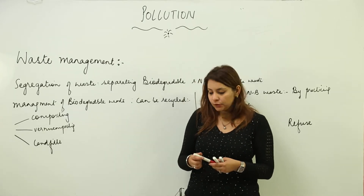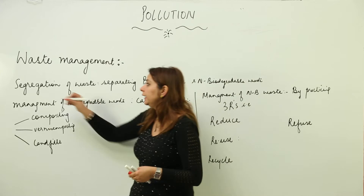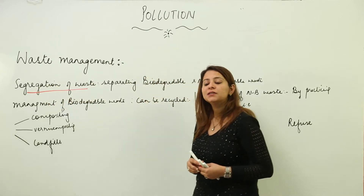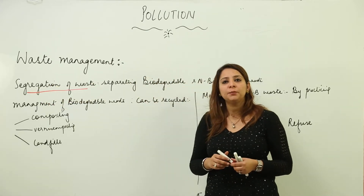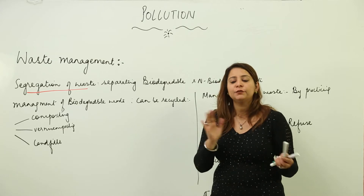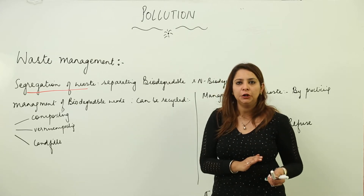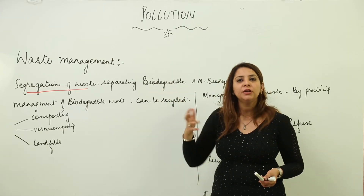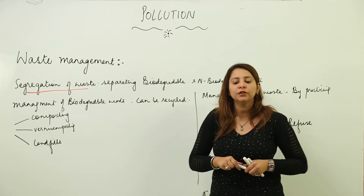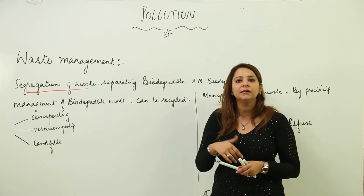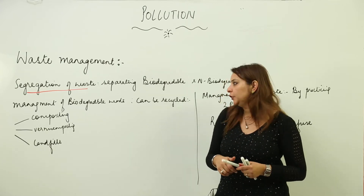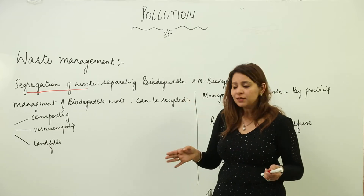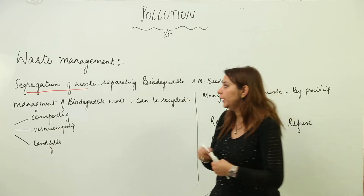Segregation of waste means separating the biodegradable waste from the non-biodegradable waste. Both can be managed, but different techniques are used for the management of biodegradable and non-biodegradable waste. So first, segregate the waste.